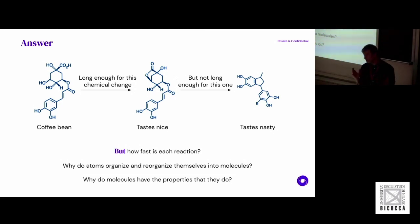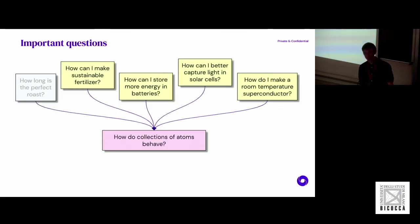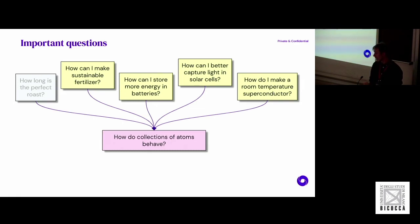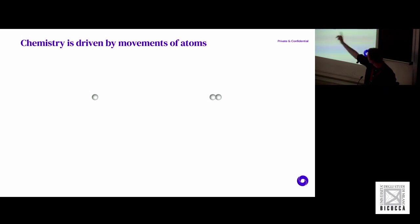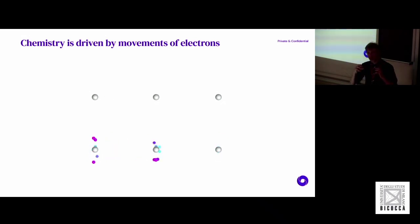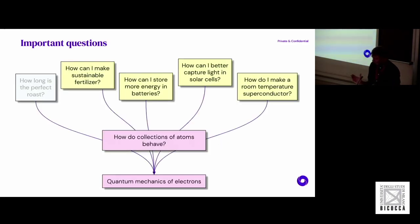All of these questions ultimately boil down to the behavior of electrons. It's not just about coffee — how do I make a fertilizer? How do I make ammonia from nitrogen? How do I stuff lots of lithium in a cathode of a battery? How do I capture light in a solar cell? What makes a material a superconductor? All of this boils down to how the atoms behave, and ultimately what glues matter together is electrons. All of these important questions fundamentally boil down to the quantum mechanics of electrons.